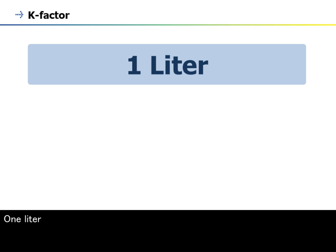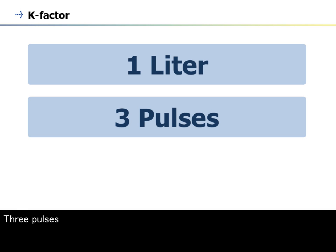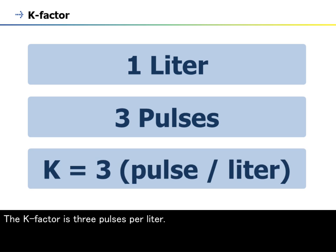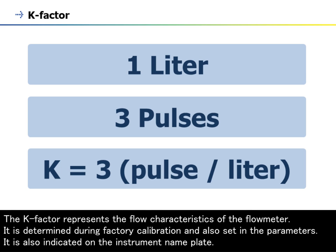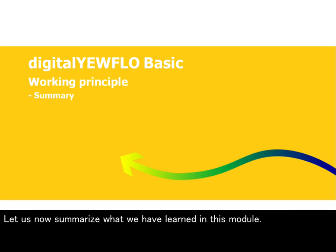The K-factor is calculated as shown. One liter, three pulses. The K-factor is three pulses per liter. The K-factor represents the flow characteristics of the flow meter. It is determined during factory calibration and also set in the parameters. It is also indicated on the instrument nameplate.